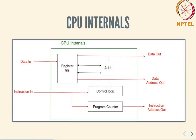Looking at the internals of the CPU, the bare minimum you can expect is: an ALU (arithmetic and logic unit); a register file used to store temporary information; bus interfaces — data in, data out, address out, instruction address — used to communicate with the outside world; a program counter that keeps track of what the address of the next instruction to read and execute is; and some control logic which at its most basic is a finite state machine that looks at the present instruction and decides what to do next.